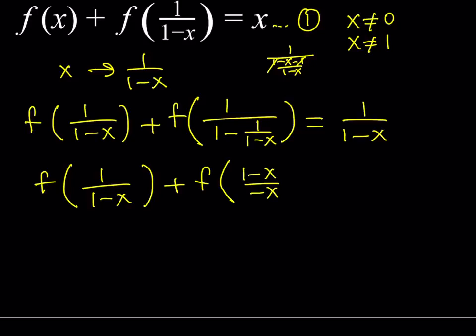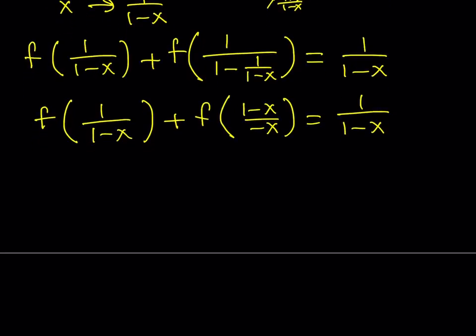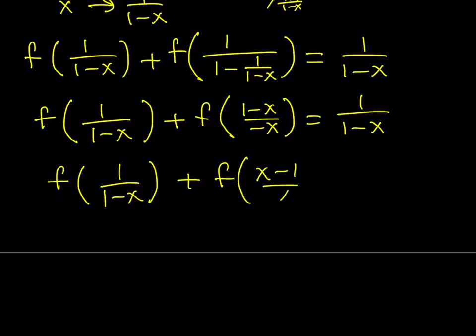We don't want to write it as (1-x)/(-x), so let's negate the top and bottom and write it as f((x-1)/x) — that looks nicer. So equation 2 becomes: f(1/(1-x)) + f((x-1)/x) equals 1/(1-x). This is our second equation.